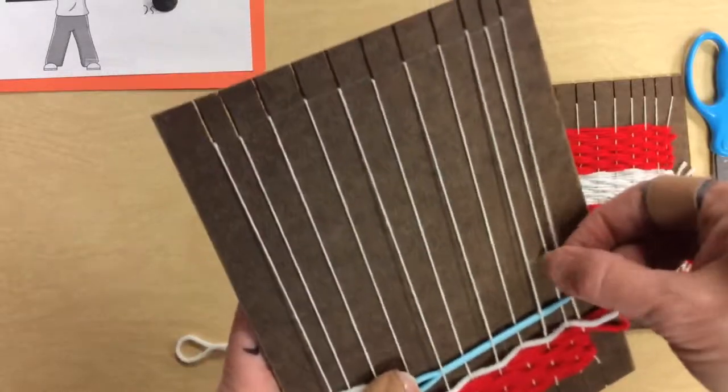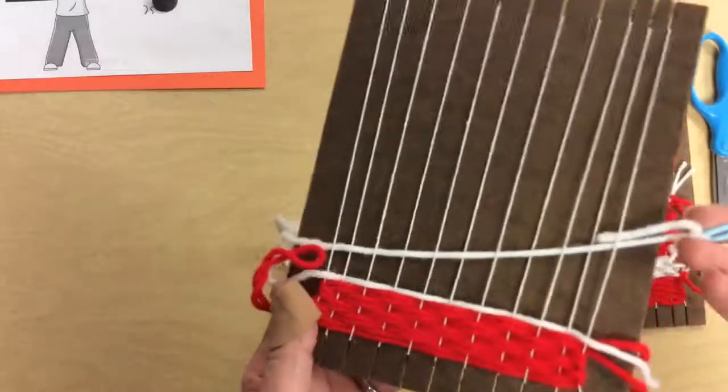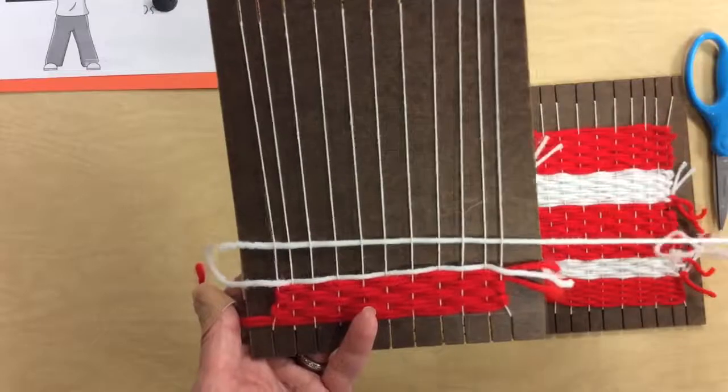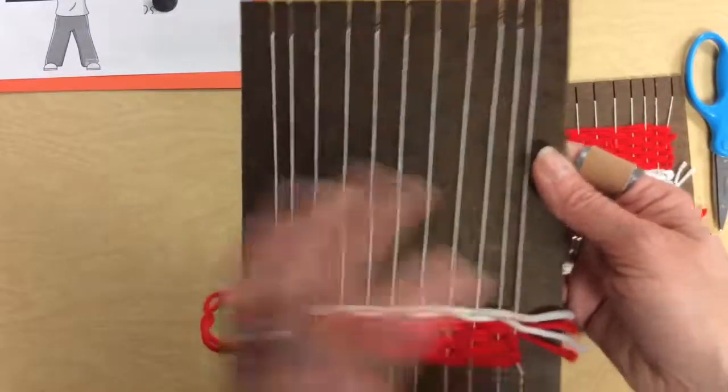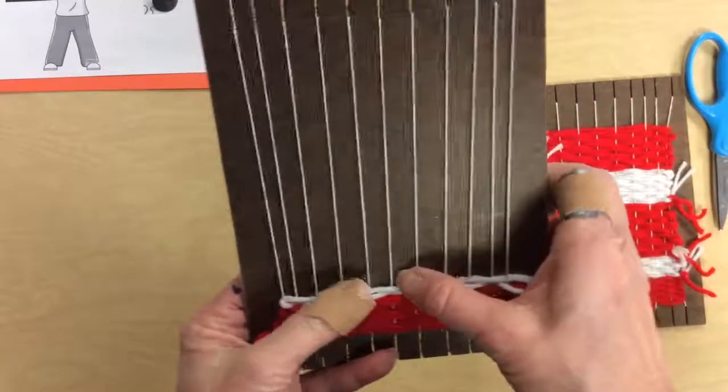And the next one that I'm going to show you is how to do a two string. So, this is one string. This will take longer. You get to choose. Okay. Pull it all the way through. Not too tight. Push it down with my fingers. Pull it back again. That's how you do a one string.